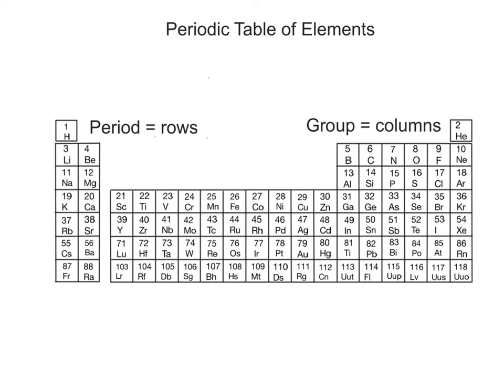Each vertical column is called a group, and the elements in each group share similar chemical properties. The periodic table is a handy reference tool because it also lists the atomic number and atomic mass of each element. The atomic number is usually written above the element symbol, and the atomic mass is usually written below the symbol. For example, calcium has an atomic number of 20 and an atomic mass of 40.